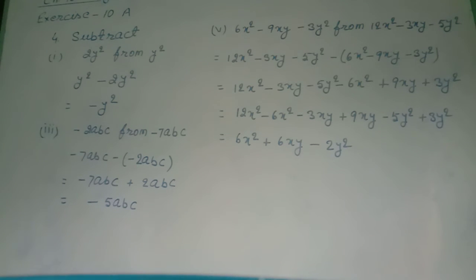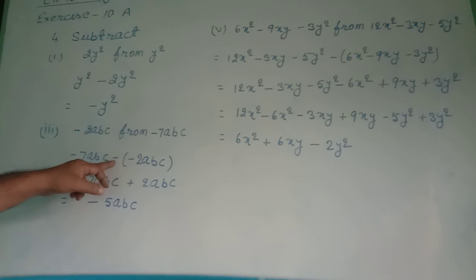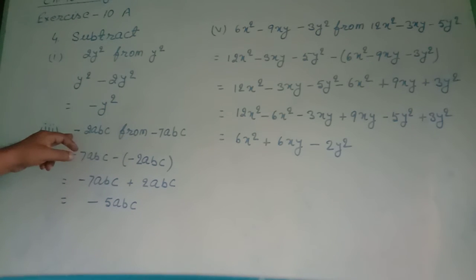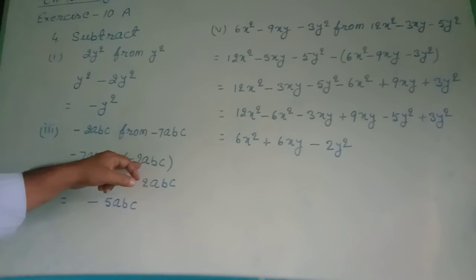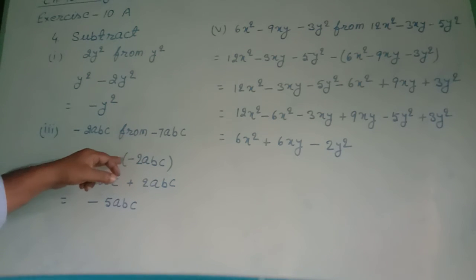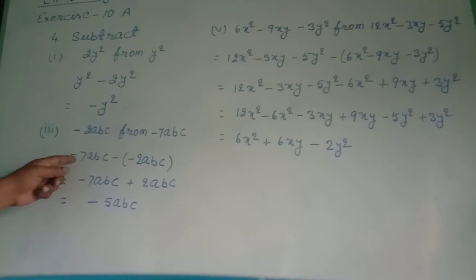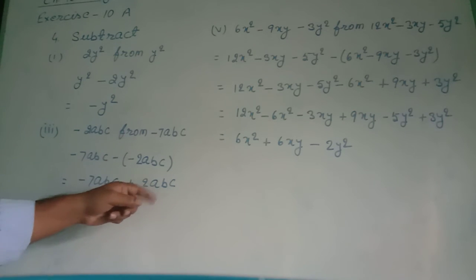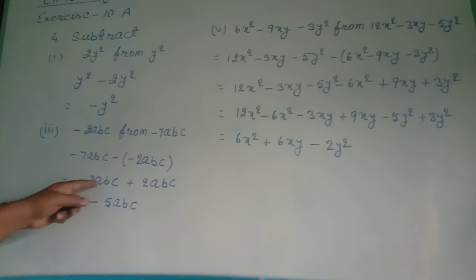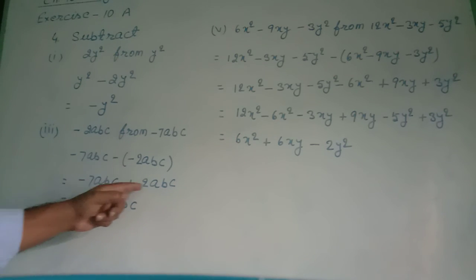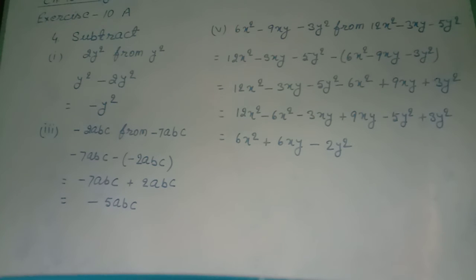Roman number 3: subtract minus 2abc from minus 7abc. So minus 7abc is written first, then minus for subtraction, then (minus 2abc) enclosed in bracket because two signs come together. Solving: minus 7abc minus minus plus 2abc. Minus plus minus means subtract: 7abc minus 2abc equals 5abc, but the sign of the greater number is minus. Answer became minus 5abc.